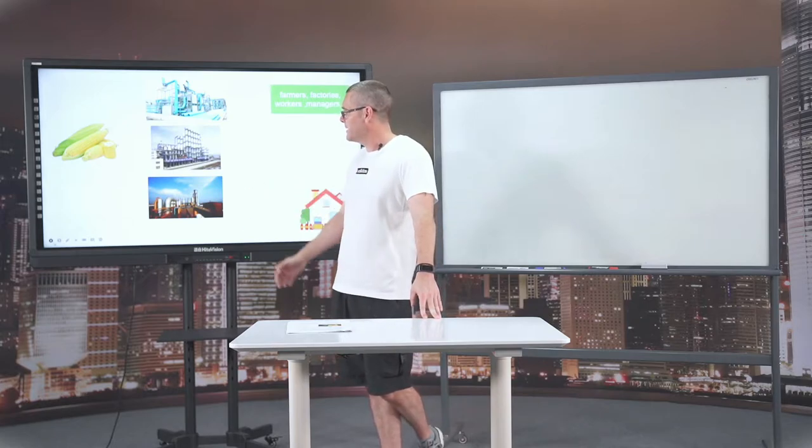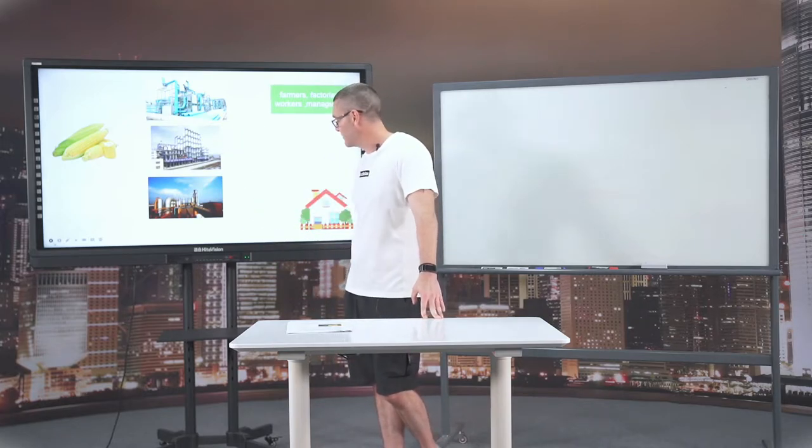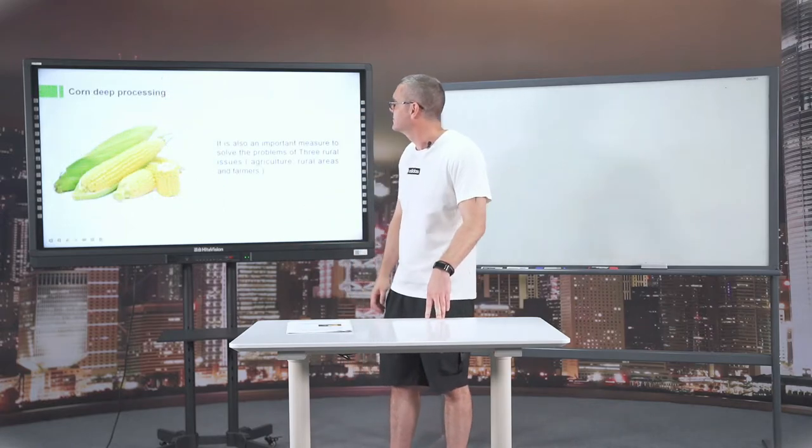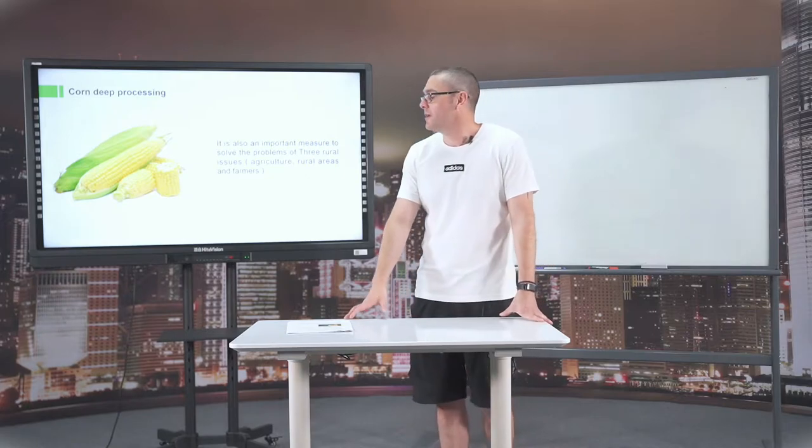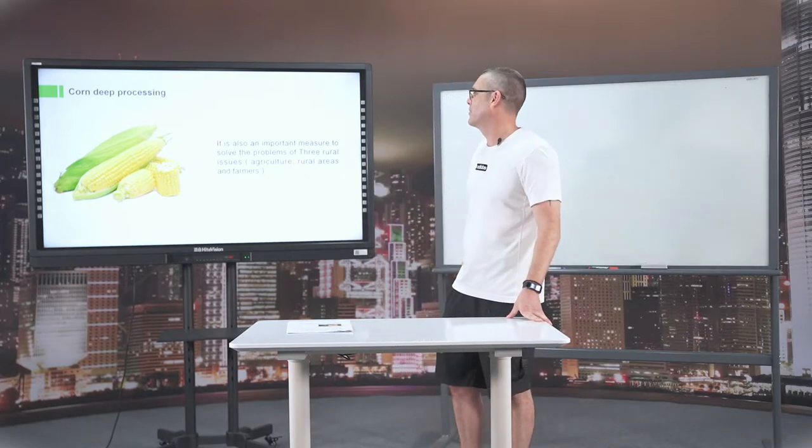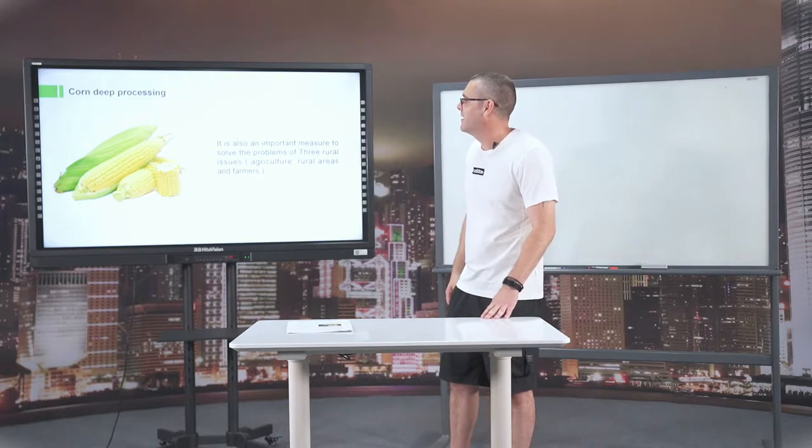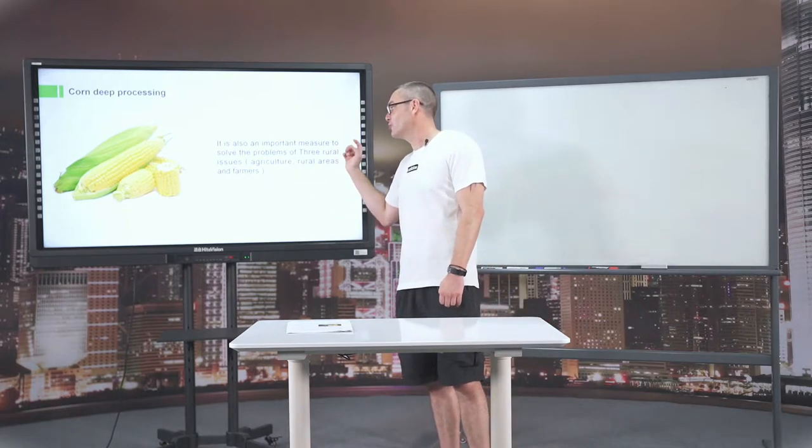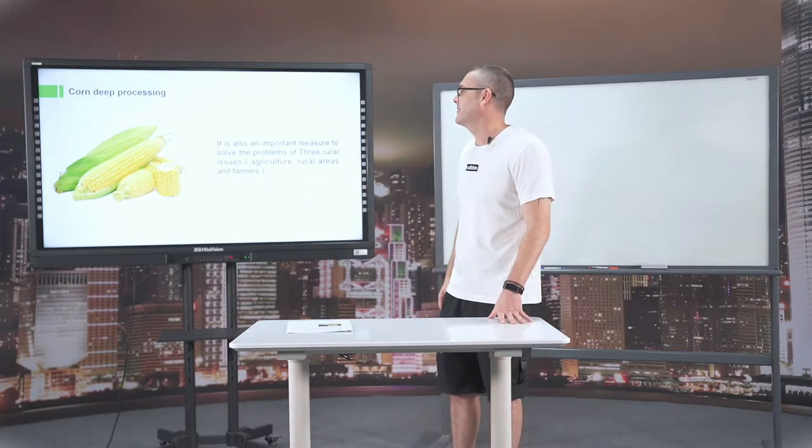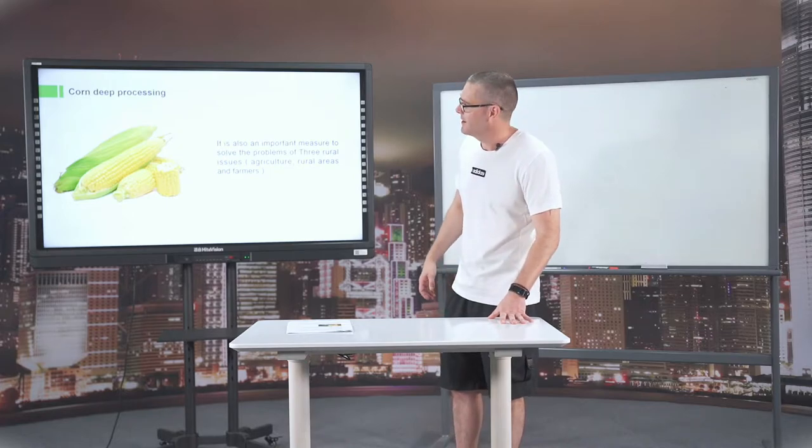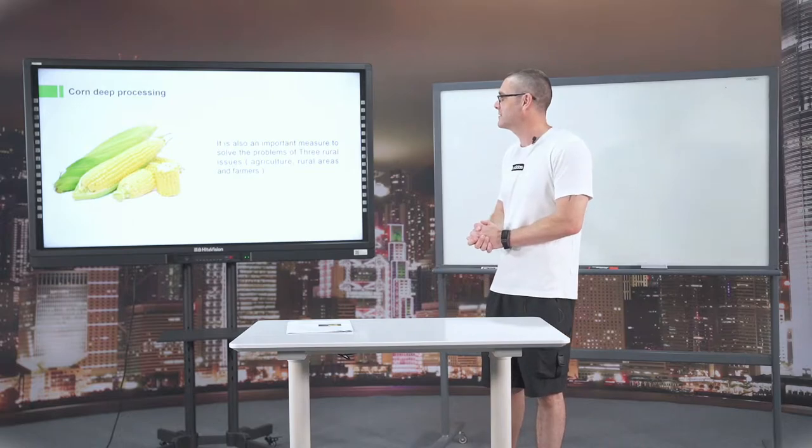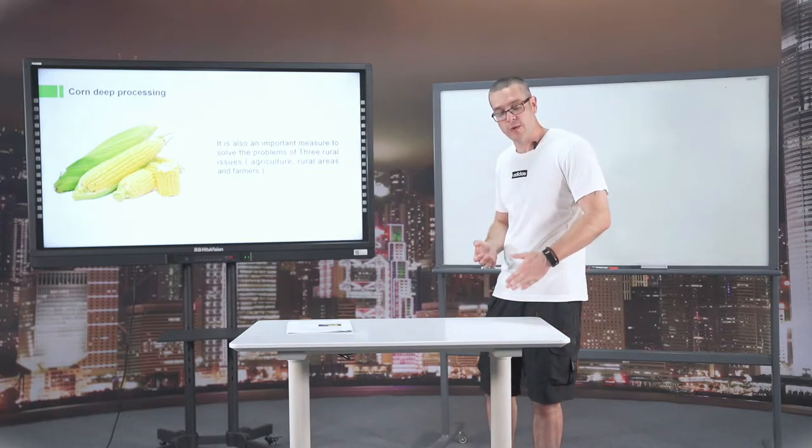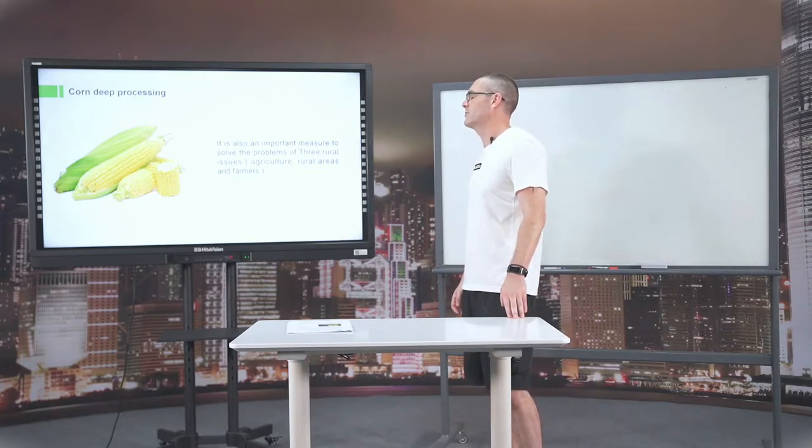All these people are involved in our factories to turn our corn into something else. With today's world we have three problems: agriculture, rural areas, and farmers. It's important for us to solve these problems because we need to fix them so we can benefit ourselves later on in the future.